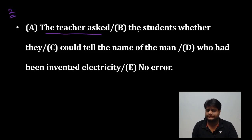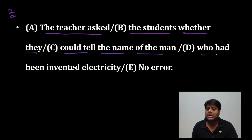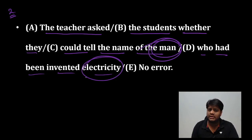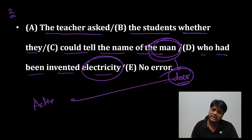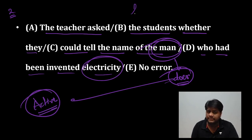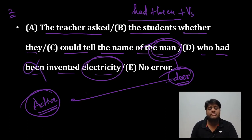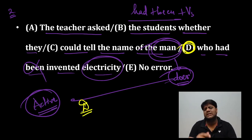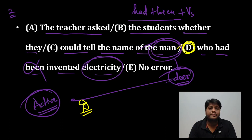'The teacher asked the student whether they could tell the name of the man who had been invented electricity.' इस बंदे ने electricity को invent किया है — यानि यह बंदा doer है। जैसा पहले बताया, यह voice active रहेगी। 'Had been' में से 'been' cut जाएगा — been के कारण यह passive voice में जा रहा है, जो गलत है। Clearly इसका answer deep part रहेगा।